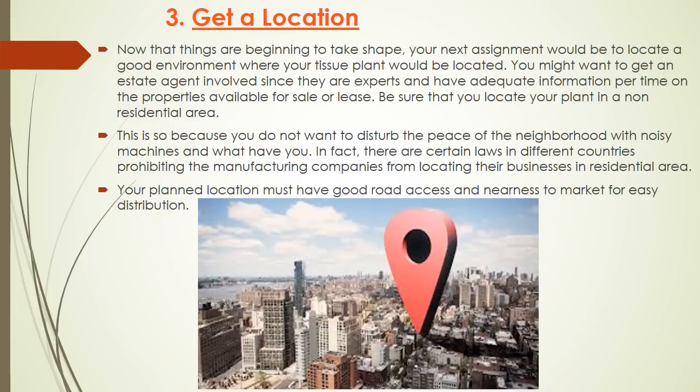Step three: get a location. Now that things are beginning to take shape, your next assignment will be to locate a good environment where your tissue plant will be situated. You might want to get an estate agent involved since they are experts with adequate information on properties available for sale or lease. Be sure to locate your plant in a non-residential area, so you do not disturb the peace of the neighborhood with noisy machines. Many countries have laws prohibiting manufacturing companies from locating in residential areas. Your plant location must also have good road access and nearness to market for easy distribution.